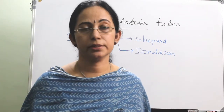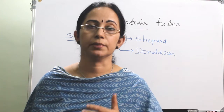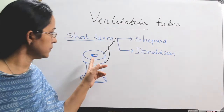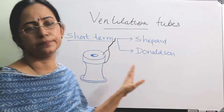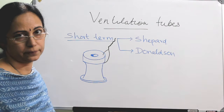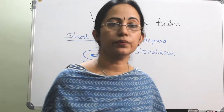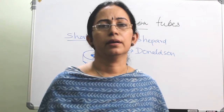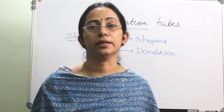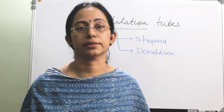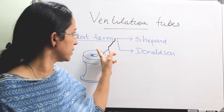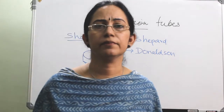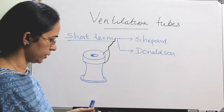Under short-term ventilation tubes, the common ones are the Shepherd and the Donarsal. In 45% of cases they extrude within a period of 6 months. They are very small and easy to insert even in a very narrow external ear canal. The Shepherd is the oldest but still very popular one.